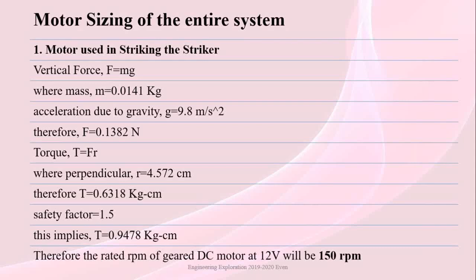Here is the motor sizing for the entire system. For the motor used in striking, force acts in the vertical direction, calculated as F = mg where M = 0.0141 kg and G = 9.8 m/s², giving F = 0.1382 N. Torque is calculated as T = FR where R = 4.572 cm, giving T = 0.6318 kg·cm. With a safety factor of 1.5, T = 0.9478 kg·cm. Therefore the rated RPM of the geared DC motor at 12V is 150 RPM.